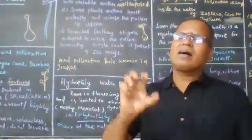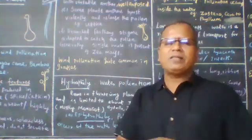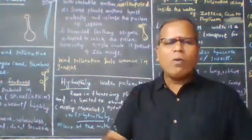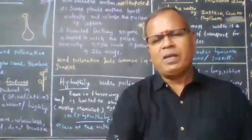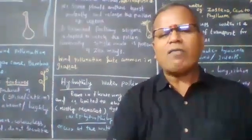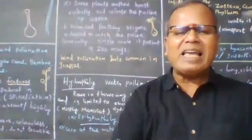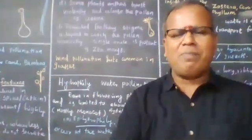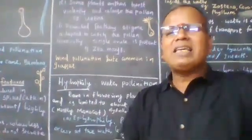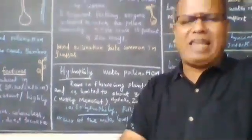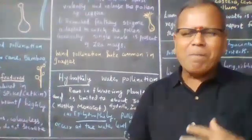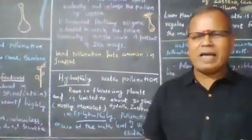Hydrophily is found in about 30 species, mostly monocots. In hydrophily, there are two types: one is epihydrophily, where pollination occurs on the surface of water.